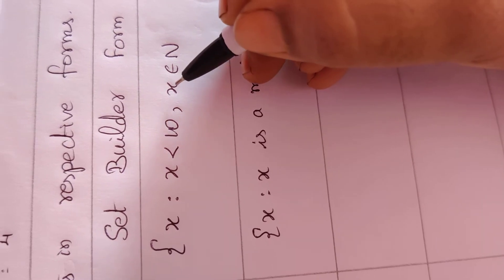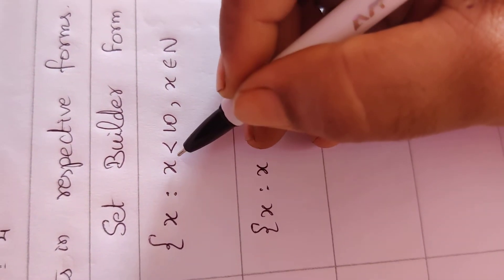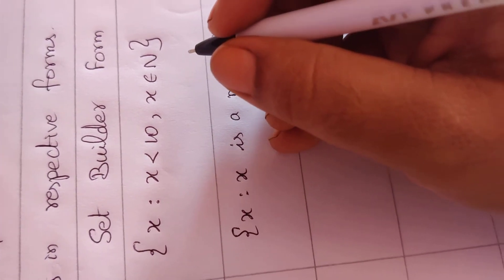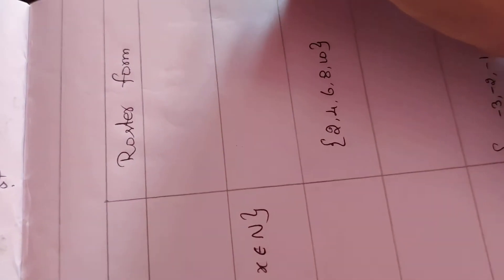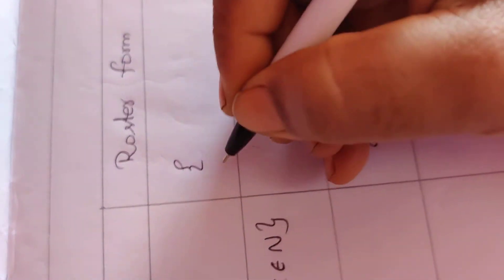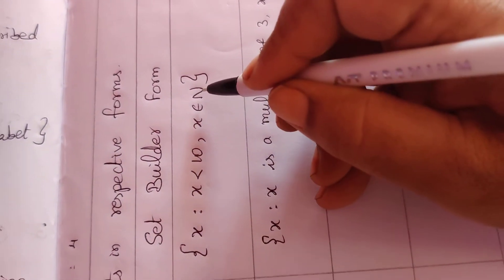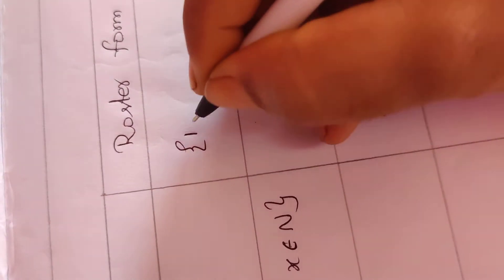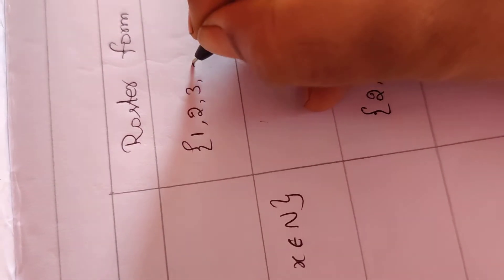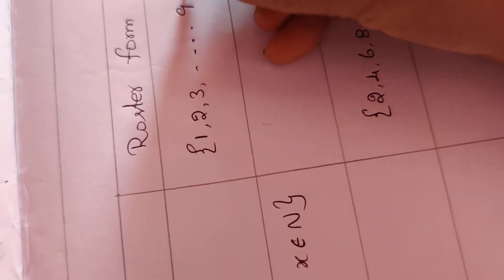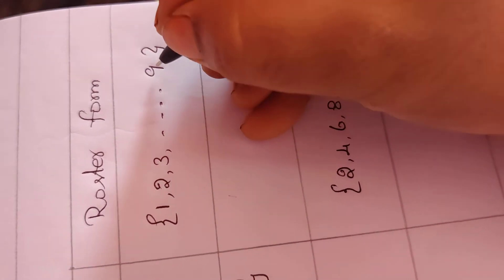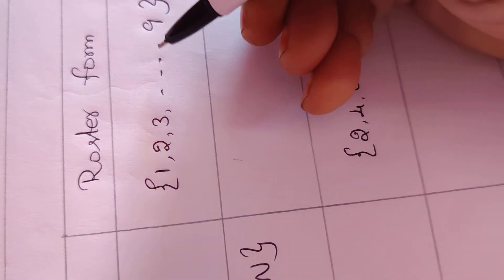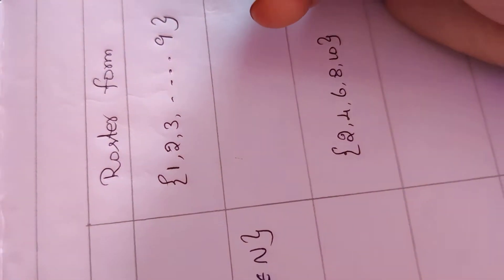Using the natural numbers starting from 1 and going up to less than 10, the last number is 9. So the roster form is: 1, 2, 3, 4, 5, 6, 7, 8, 9. This is the roster form.